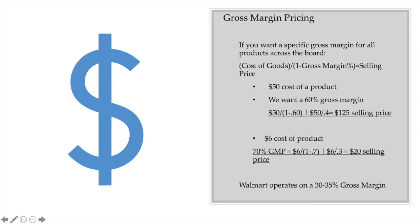If you're buying a product and reselling it, how do you get a 60% margin? What would be your selling price? We know our product costs $50 and I want a 60% gross margin. So I do 50 divided by 1 minus 0.60, which is 50 divided by 0.4. My selling price is $125 — that gets me the 60% gross margin.